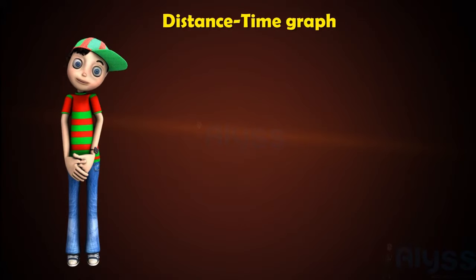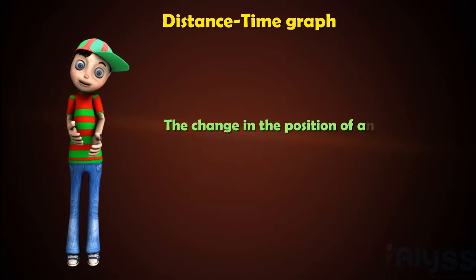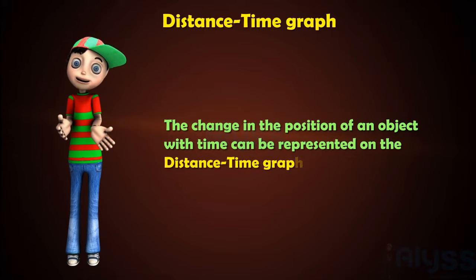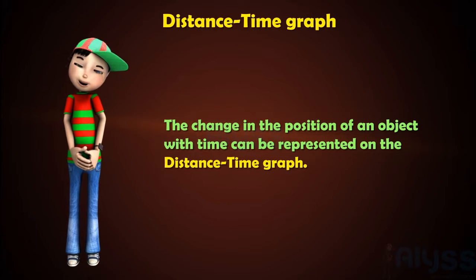In distance-time graph, the change in the position of an object with time can be represented on the distance-time graph, adopting a convenient scale of choice.